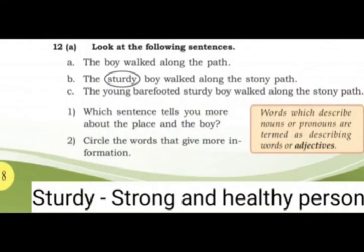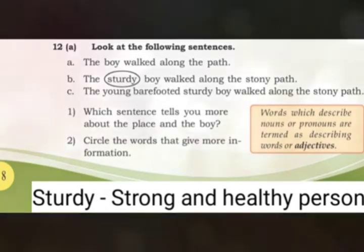12A. Look at the following sentences. A: The boy walked along the path. B: The sturdy boy walked along the stony path. C: The young barefooted sturdy boy walked along the stony path. Before going to the question we can go to some examples.